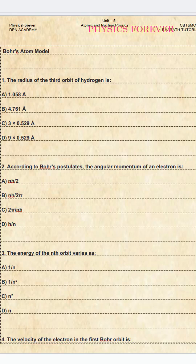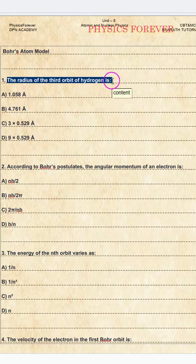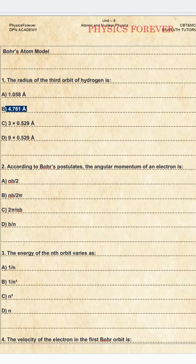First question: the radius of the third orbit of hydrogen is? The correct option is B, 4.761 Å. We have to substitute the formula and apply it to get this answer.